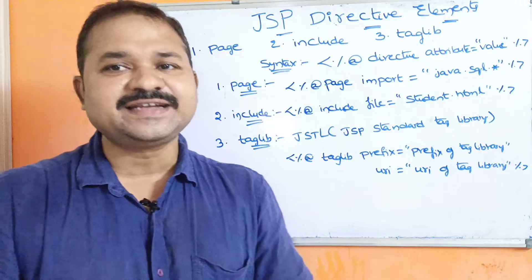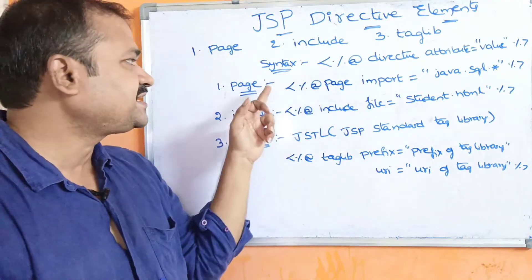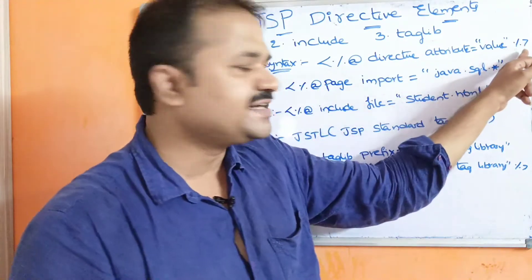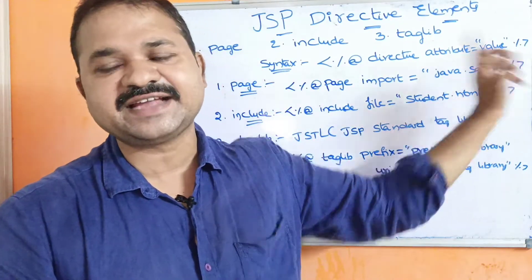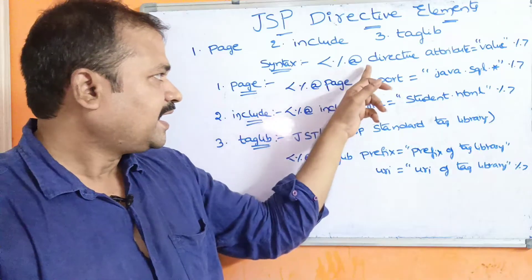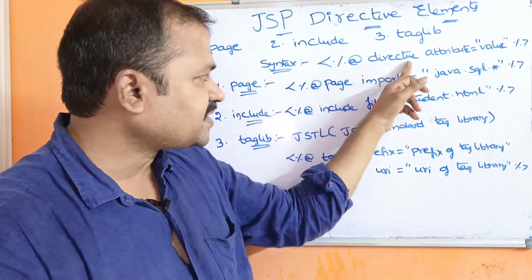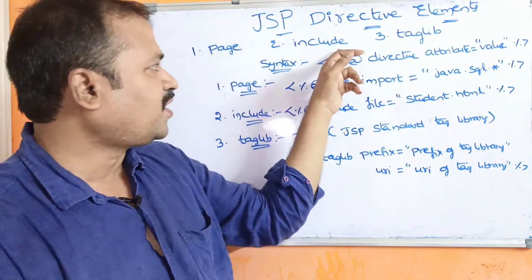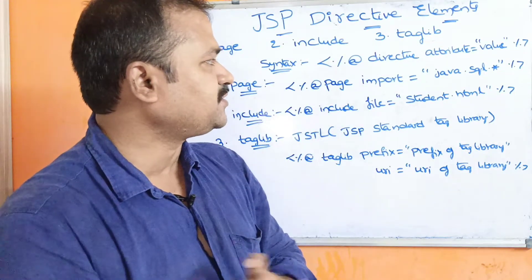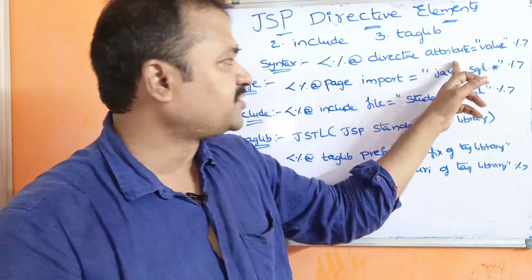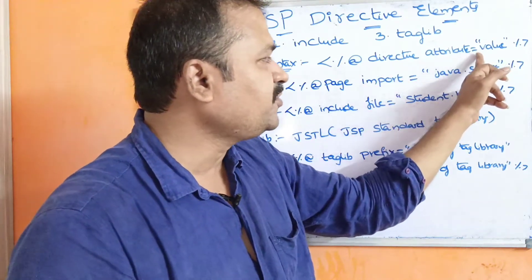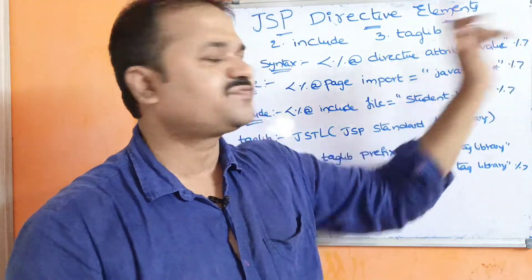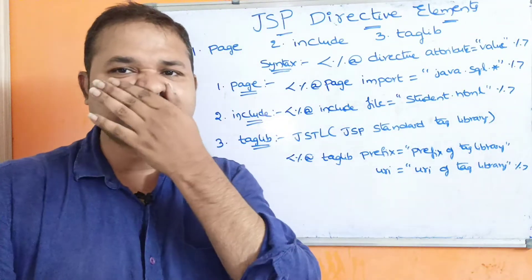Let us see the syntax here. Any directive starts with the less-than percentage at-rate symbol and ends with the percentage greater-than symbol. In between, we have to use an element called directive — which may be page directive, include directive, or taglib directive — followed by attribute equals value within double quotations.